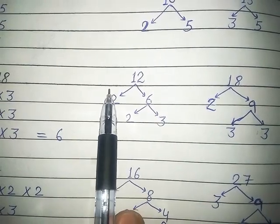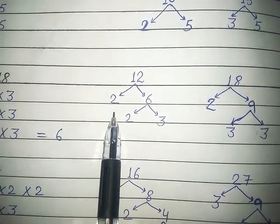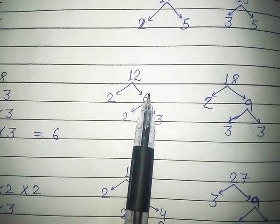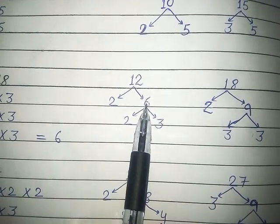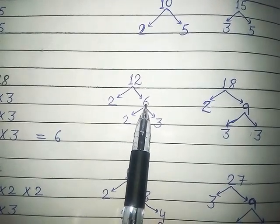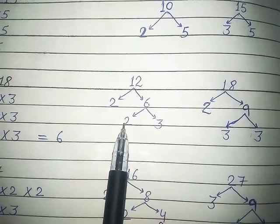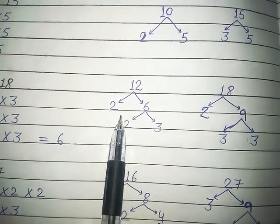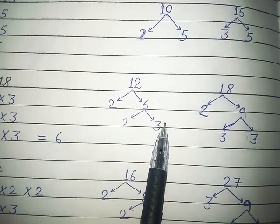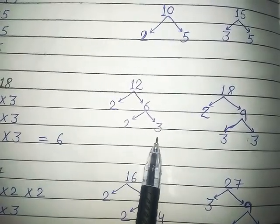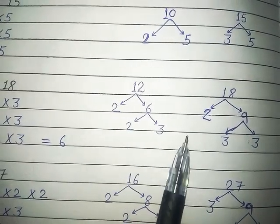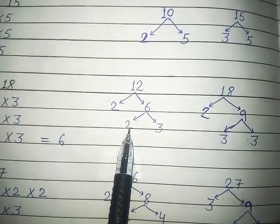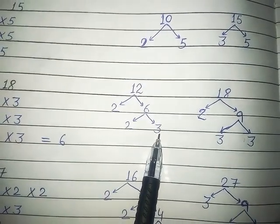But students, what do we find? A prime number means it cannot be divided further. But 6 is a composite number, which we can also divide. So 6 goes to the next step: 2 into 3. Now both are prime numbers and cannot be divided further. So the factors of 12 become 2 into 2 into 3.